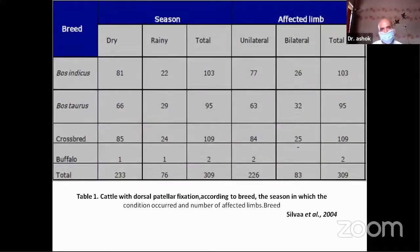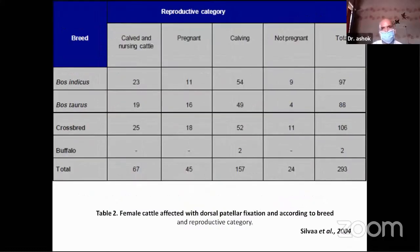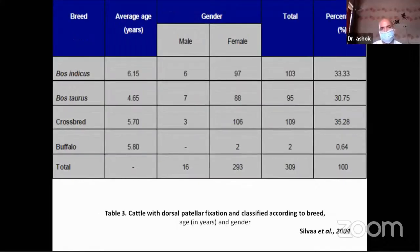Research showing seasonal variation indicates that 233 cases were affected in the dry season as compared to 76 in the wet season, out of a total of 309 cases. A table also shows the different stages and phases of pregnancy and calving at different levels. The data confirms that only adult animals are most affected.